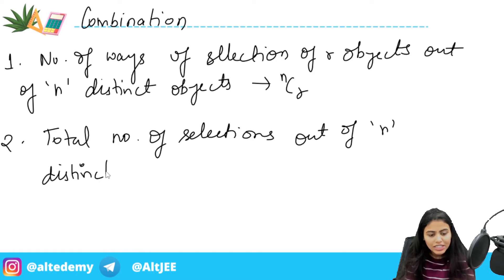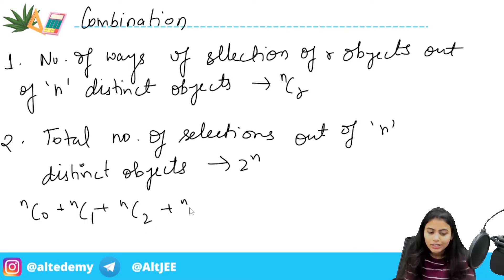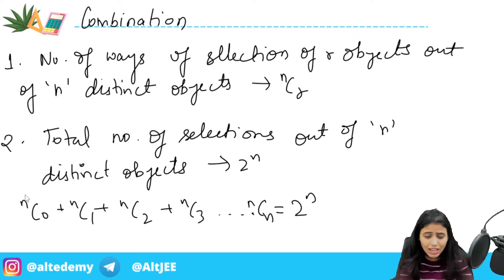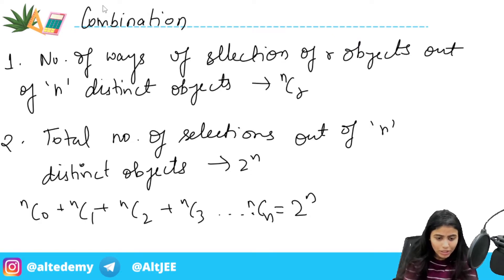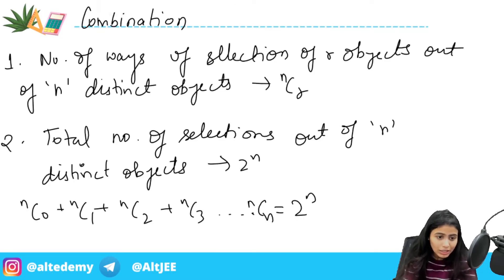The total number of selections out of n distinct objects is 2 to the power n, because the series nC0 plus nC1 plus nC2, with zero objects chosen, one object chosen, two objects chosen, and so on up to n objects chosen, sums to 2 to the power n. This also uses binomial theorem — I hope you know this.